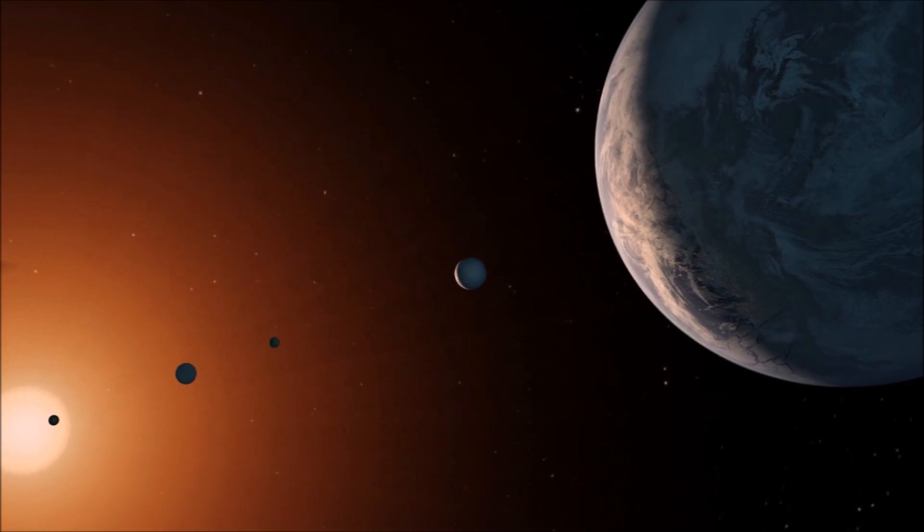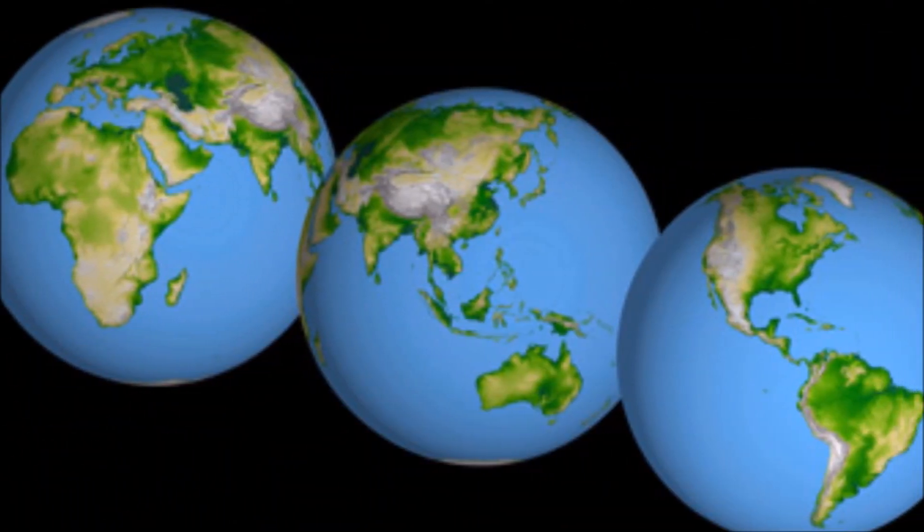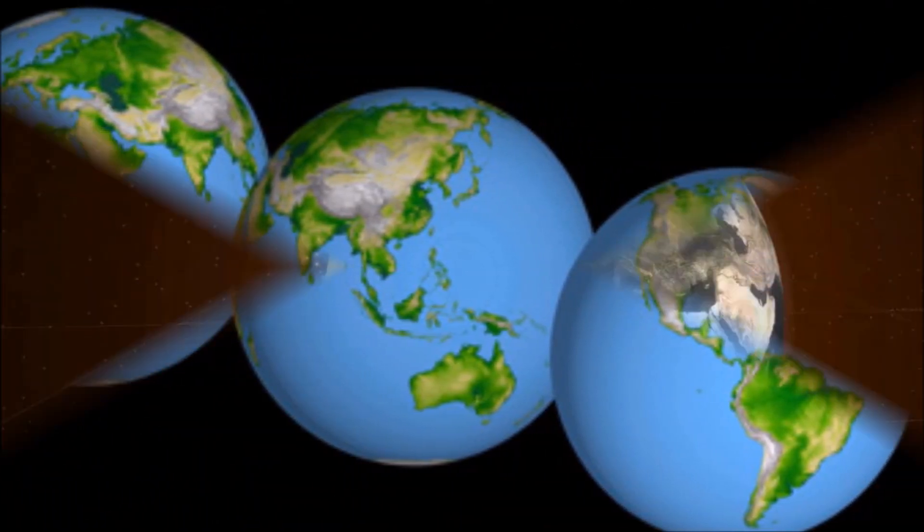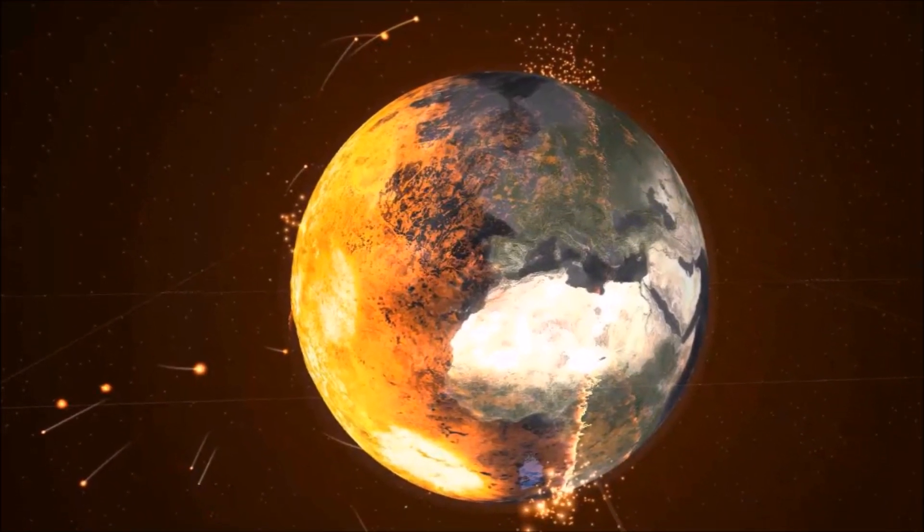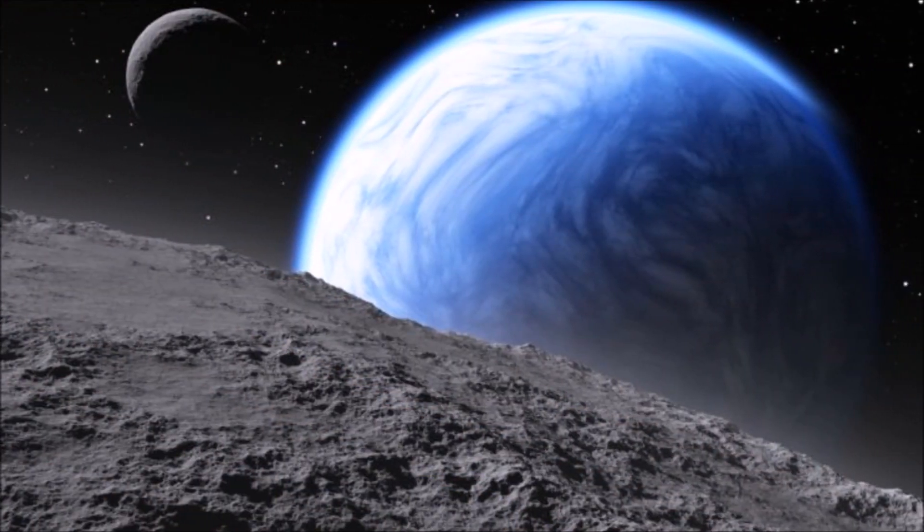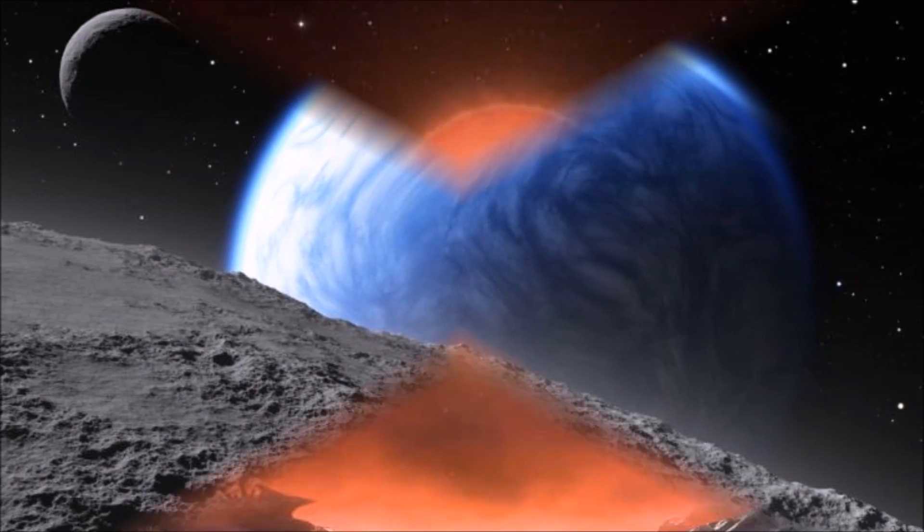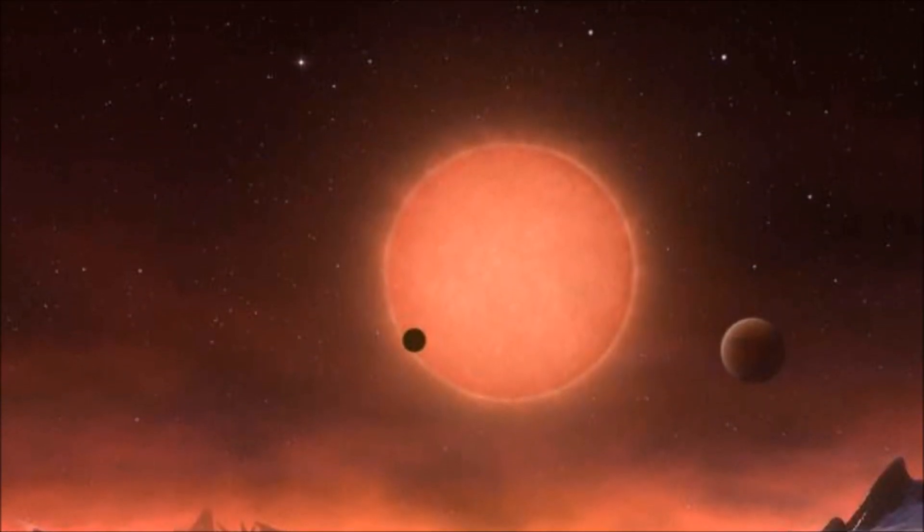So what's so special about KOI 7711.01? It's about 30% larger than the Earth and it's in the habitable zone. This means that it gets the right amount of heat to warm the planet like Earth. Plus, the solar warmth on this planet could help produce liquid water on the planet's surface.